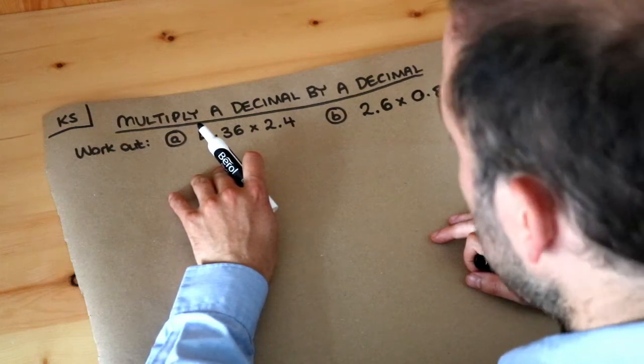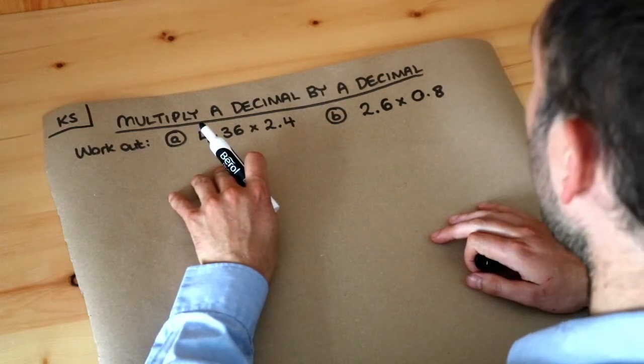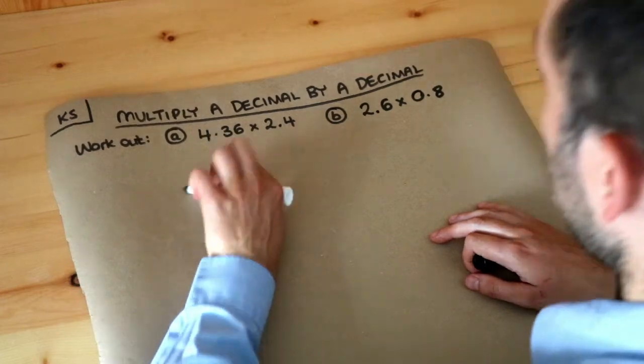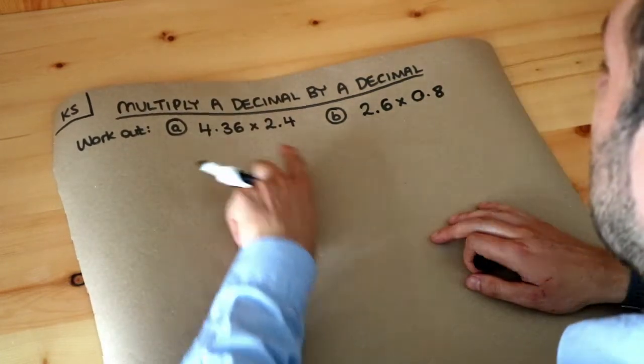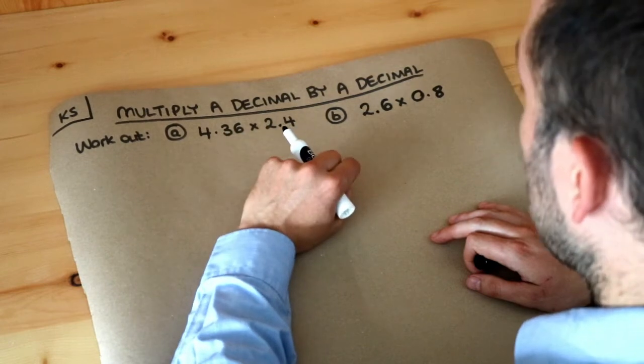Hello and welcome to this Dr. Foster Maths key skill video on multiplying a decimal by a decimal. We've got two decimal numbers here, and a decimal number is just when we have digits after the decimal point.